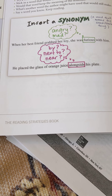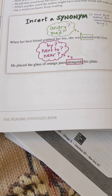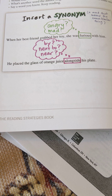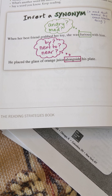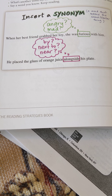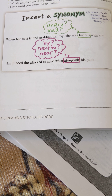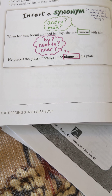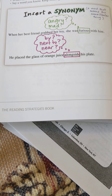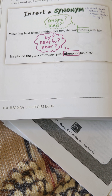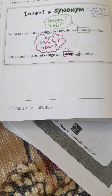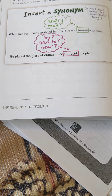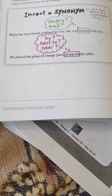For inserting a synonym, if you see this anchor chart, it says a synonym is a word that means the same or similar thing. The top sentence says: when her best friend grabbed her toy, she was furious with him. So if we pretend we don't know that word — furious — let me insert a synonym. You might think: well, how do I know the synonym if I don't know the first word?